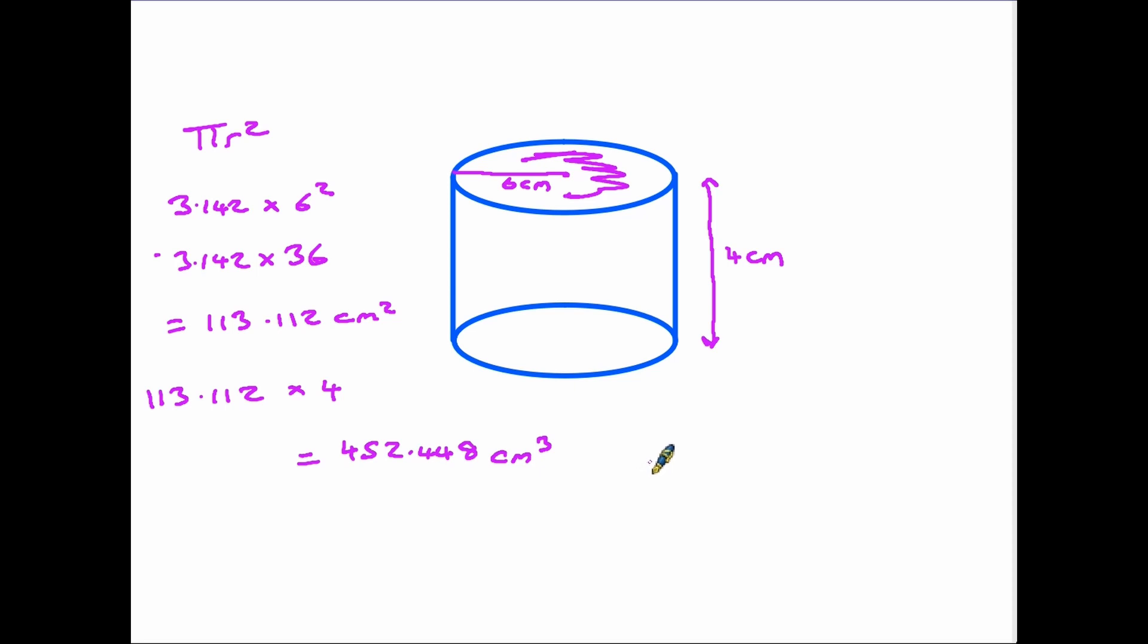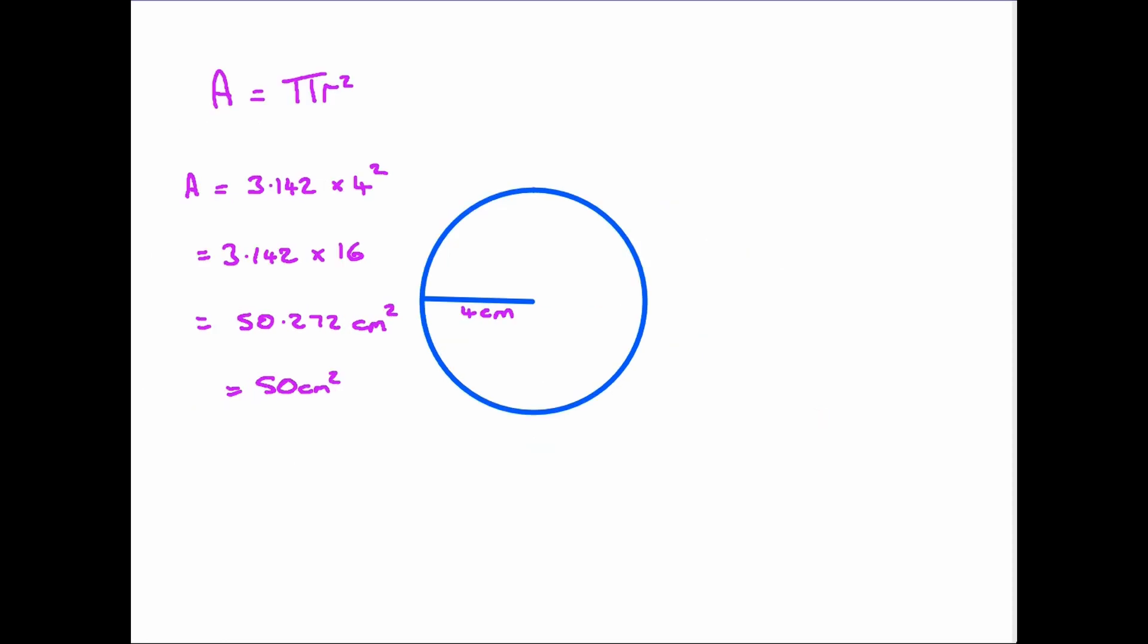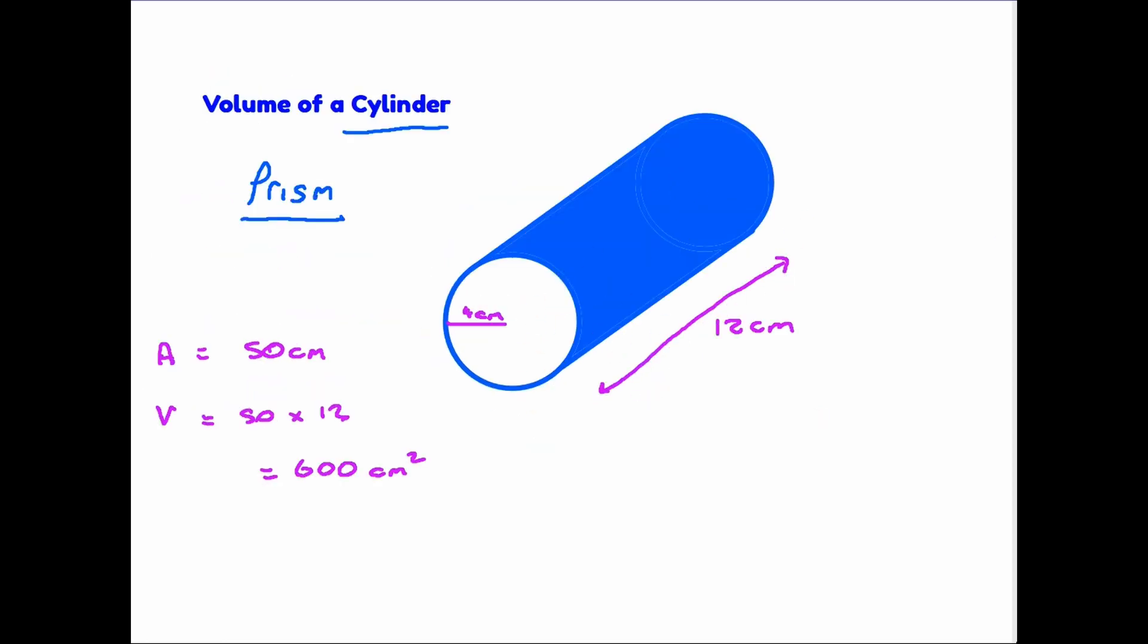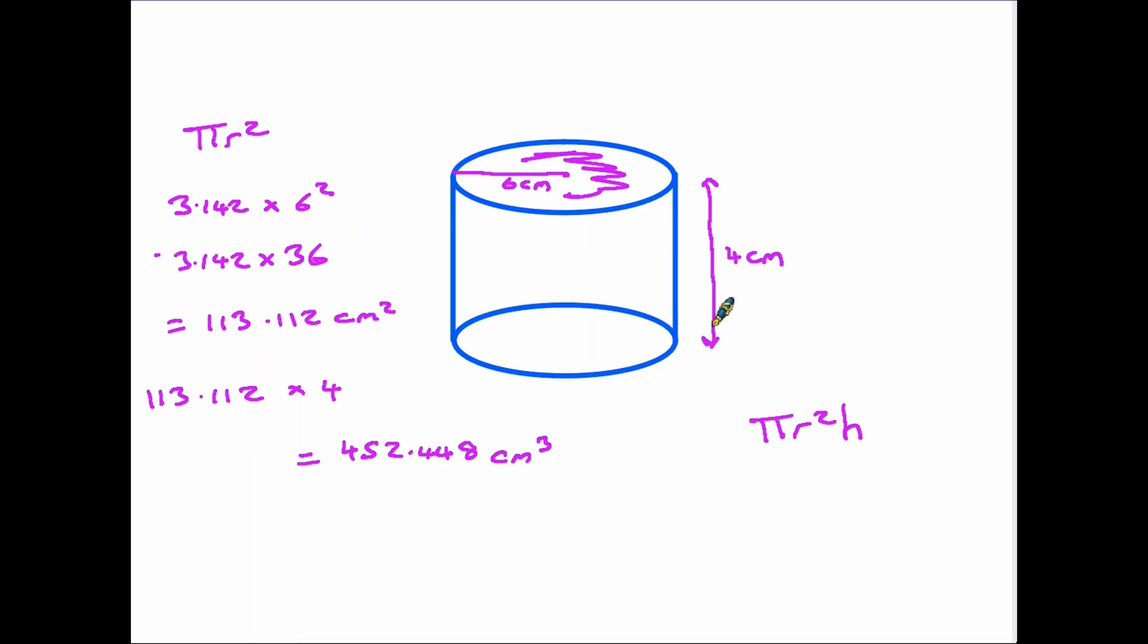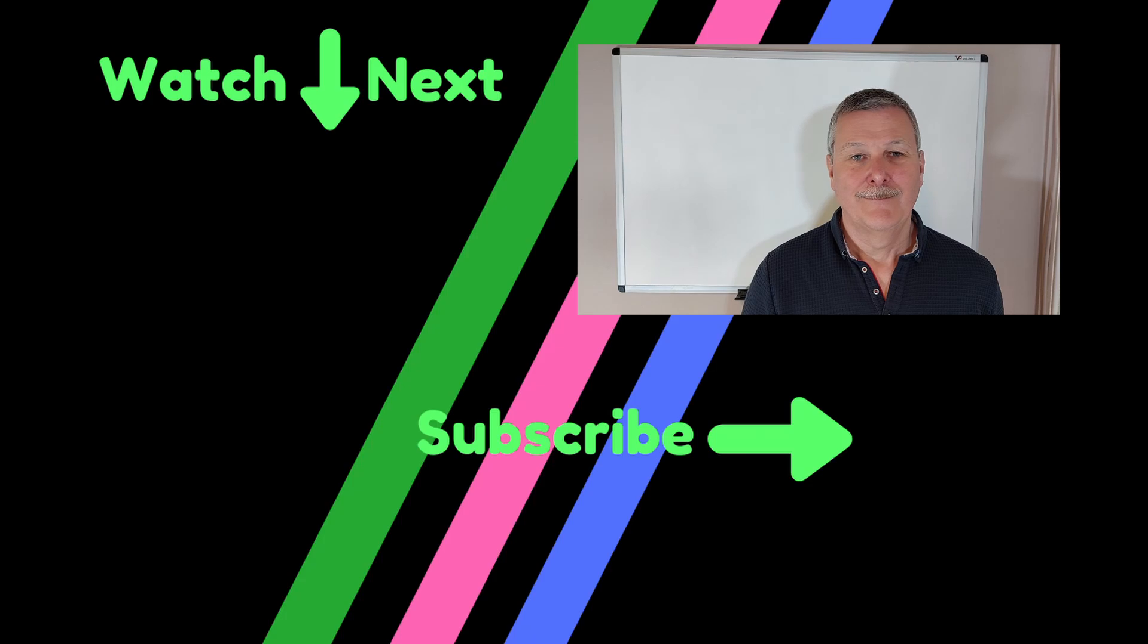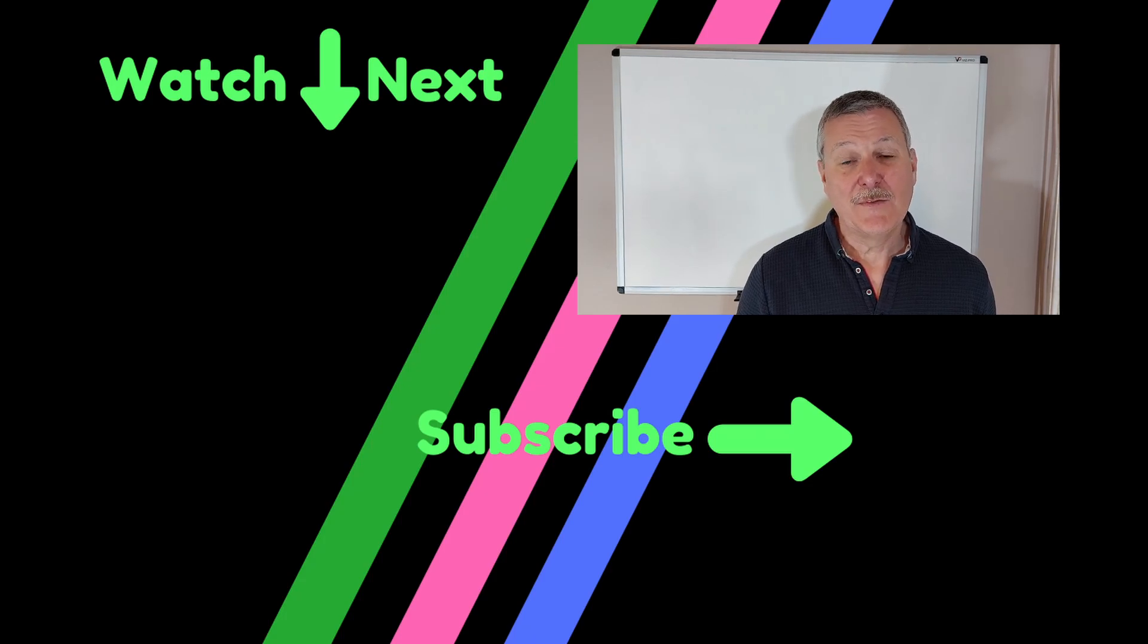And that's volume of a cylinder. To put it into its actual formula, if you think about what you've just done, you have worked out the area of the circle, so you have used πr². You then multiply by its height, so in total it's π times r² times its height. Don't be put off by the previous example where the cylinder was on its side. It's the same measurement—the measurement along the length of the cylinder. And that's it, the volume of a cylinder.